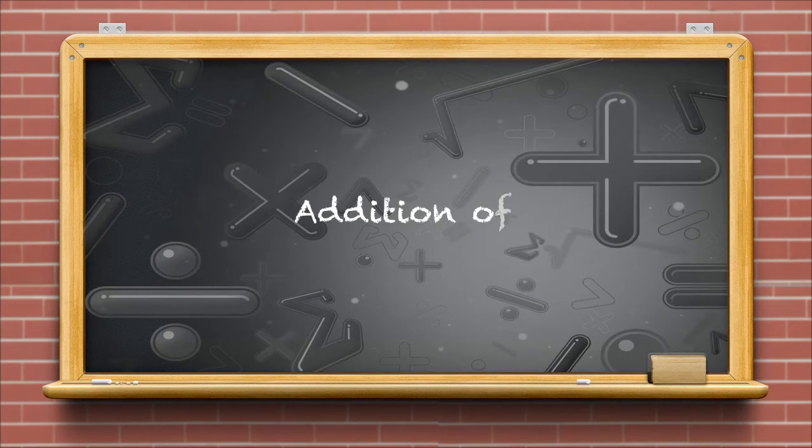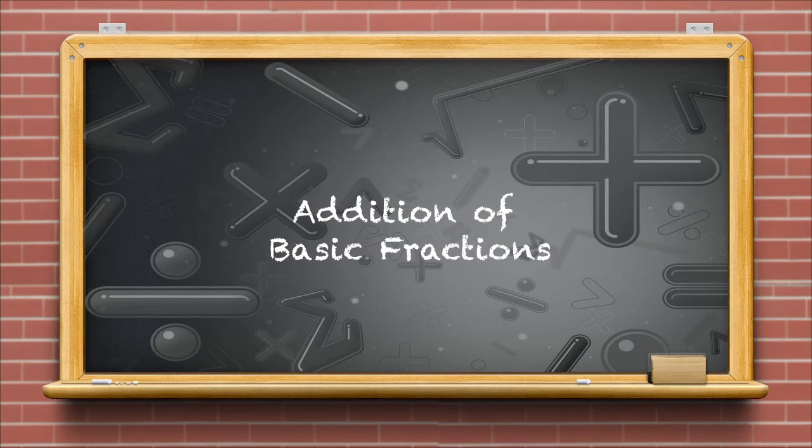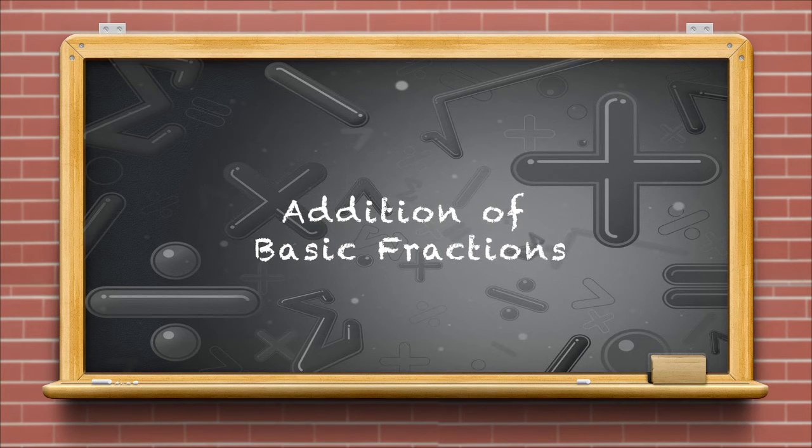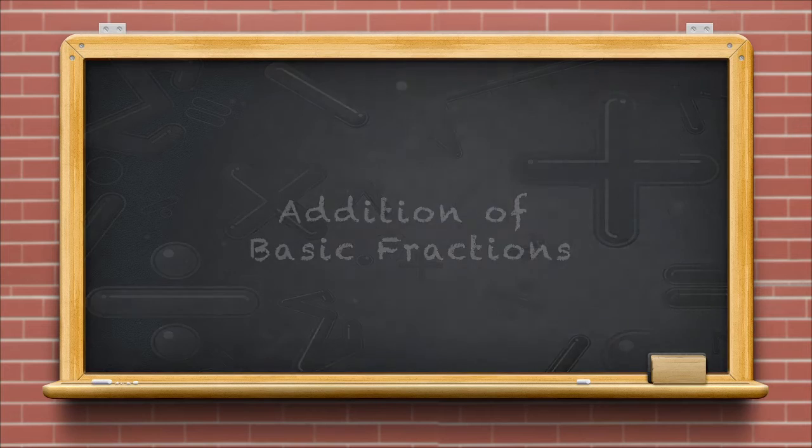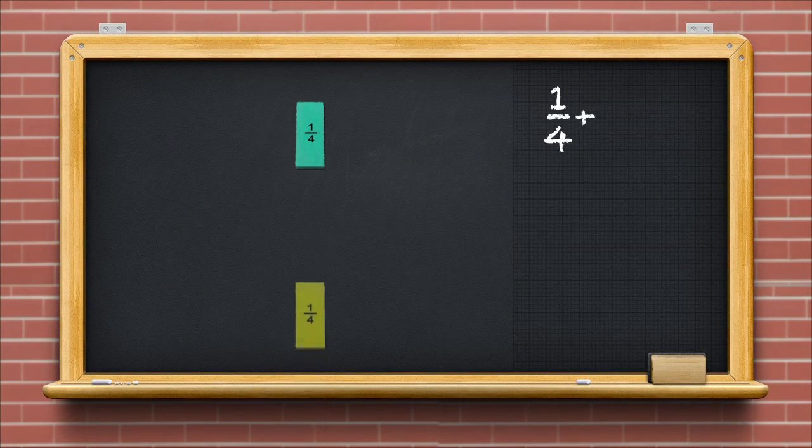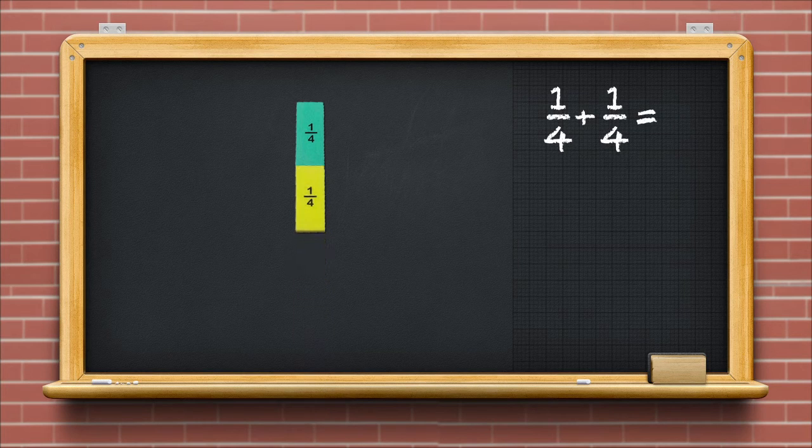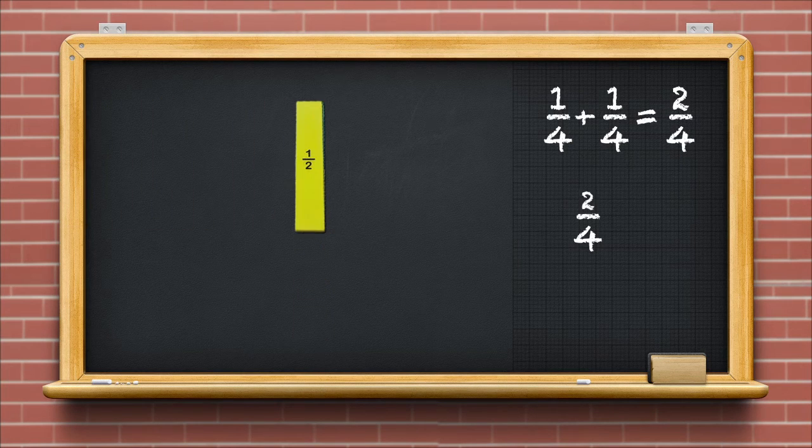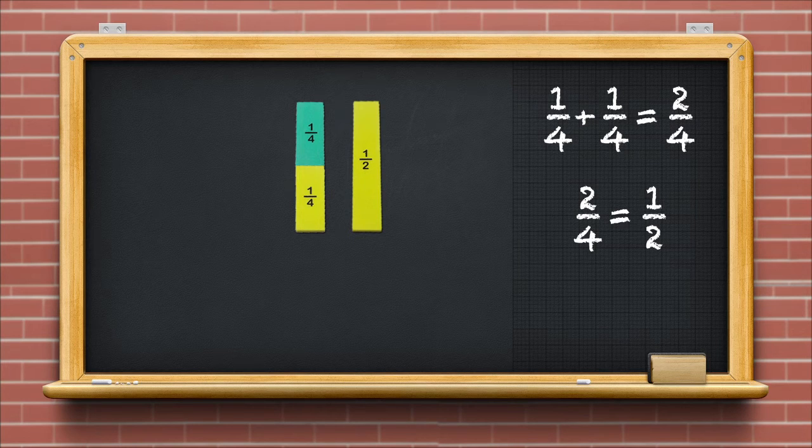Now that students understand fractions, they will be ready to add basic fractions. Take one fraction strip marked 1 upon 4 and add another 1 upon 4 to it. We then get 2 upon 4, which is also called half.